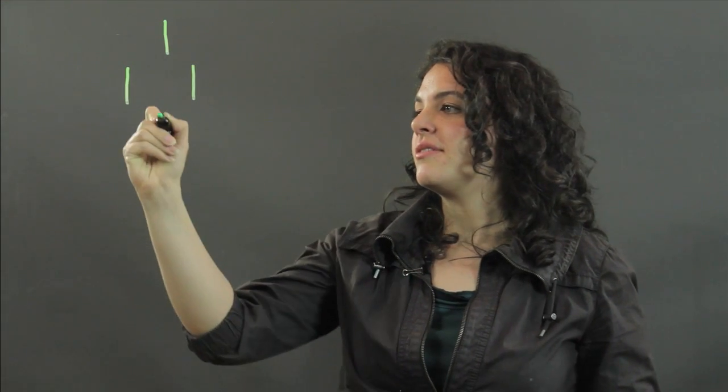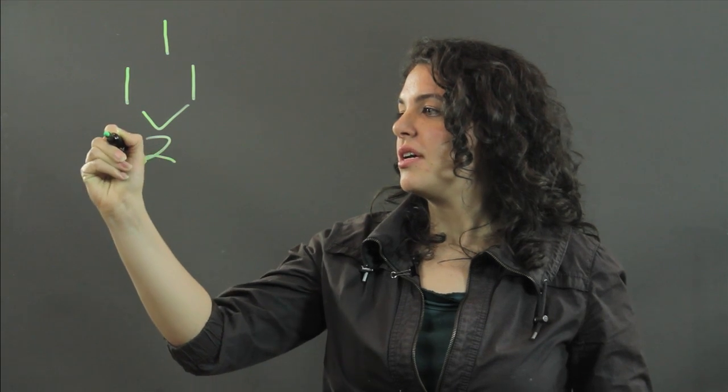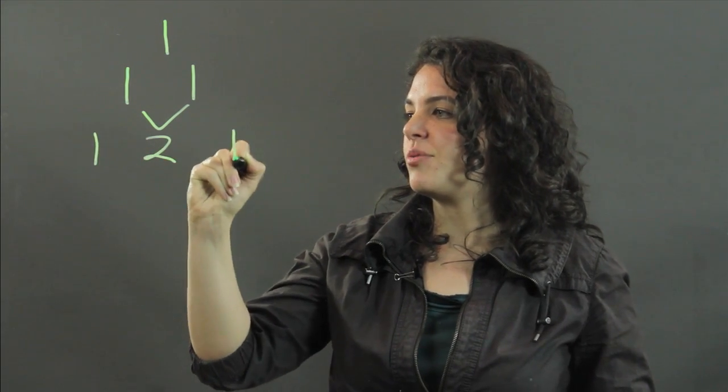To get the third line, we add the elements from the second line. So we get two, and then we begin and we end with one.